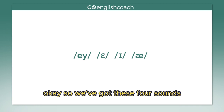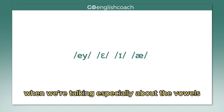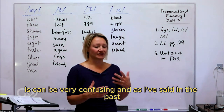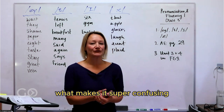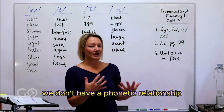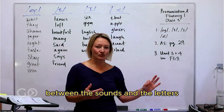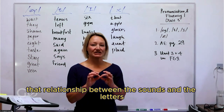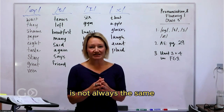So we've got these four sounds, and I really like to go sound by sound when we're talking especially about the vowels, because the English vowel system can be very confusing. What makes it super confusing is the fact that we don't have a phonetic relationship between the sounds and the letters in English. So that relationship between the sounds and the letters is not always the same.